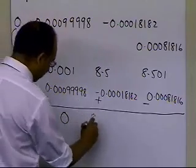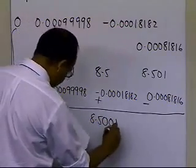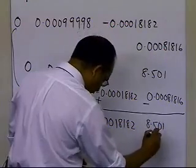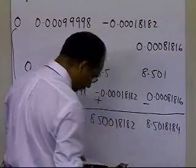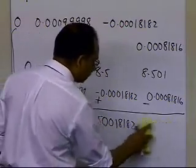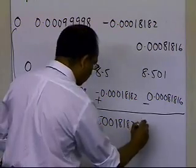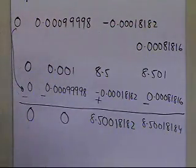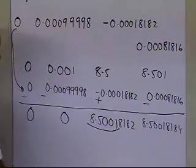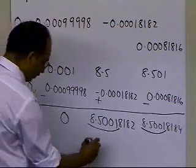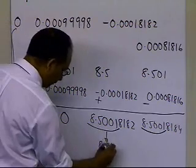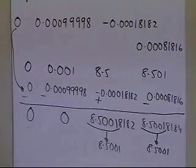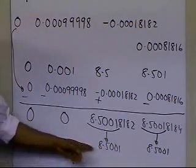Continuing the subtraction: 8.5 minus minus 0.0018182 gives 8.5001818, and 8.501 minus 0.0081816 gives 8.5001. But since we can only take five significant digits with chopping, both numbers become 8.5001. All calculations must follow the protocol of five significant digits with chopping.